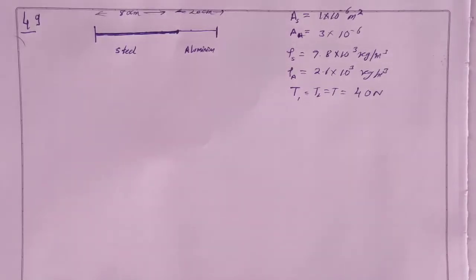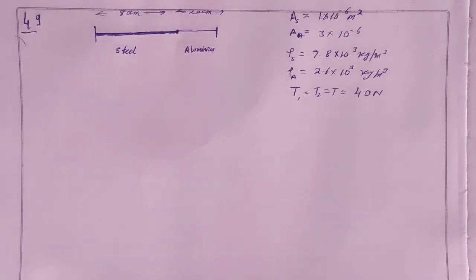SC Verma Solution Chapter 15 Wave Motion and Waves on a String Question No. 49. Figure shows an aluminum wire of length 60 cm joined to a steel wire of length 80 cm and stretched between two fixed supports. The tension produced is 40 N. The cross-sectional area of steel wire is 1 mm² and that of aluminum wire is 3 mm². What would be the minimum frequency of the tuning fork which can produce standing waves in the system with the joint as a node? The density of aluminum is 2.6 gram per cm³ and density of steel is 7.8 gram per cm³.